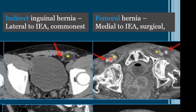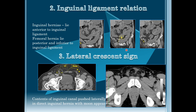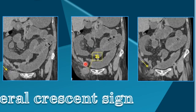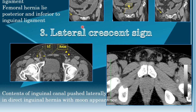The second criterion is the relation with the inguinal ligament. If the hernia occurs below the inguinal ligament, it is a femoral hernia. If the hernia is seen above the inguinal ligament, it is called an inguinal hernia.